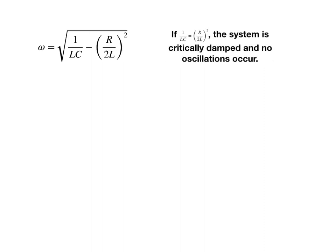However, if 1 over LC is equal to quantity R over 2L squared, notice what happens here. We get a zero under the radical. That means the oscillation frequency is zero. That's a real solution. But it does mean the system doesn't oscillate. This refers to the situation in which, as the capacitor discharges, once it's discharged, it doesn't recharge. Because we let enough energy out of the system to keep it from doing so.